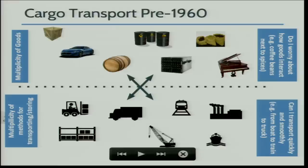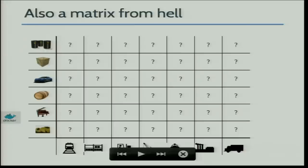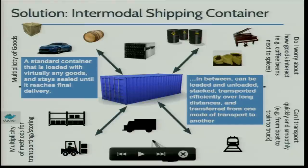The other problem was how do you know that every vehicle you use will be able to transport your products correctly. That's comparable to what we're doing with software today — you don't know how things will interact with each other, and you don't know how things will act once on the target. It's also a matrix from hell. But in transport, we've already solved this problem.